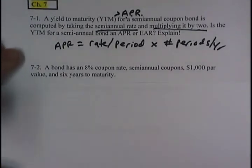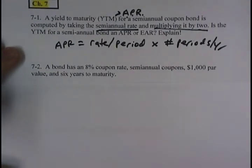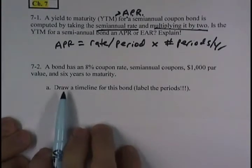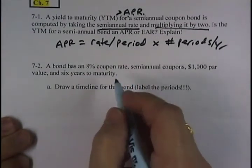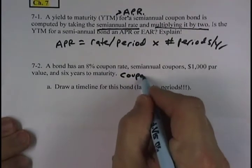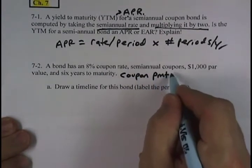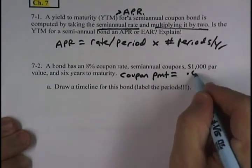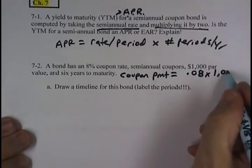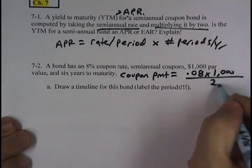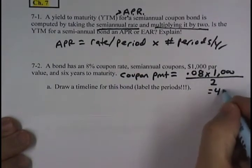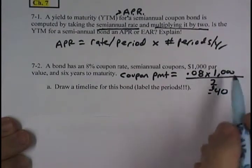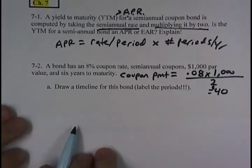Problem 7.2 says a bond has an 8% coupon rate, semi-annual coupons, $1,000 par value, and 6 years to maturity. Draw a timeline for this bond and label the periods. Well, first, let me get the coupon payment. Coupon payment is the coupon rate multiplied by the par value divided by the number of payments the bond makes per year, which for semi-annual is 2. So each coupon payment will be $40, half of the $80 paid out over the year.